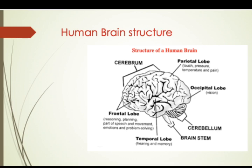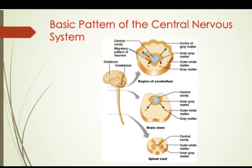All four lobes are important for the effective functioning of the human brain. If you look at the basic structure of the central nervous system, you have grey matter and white matter throughout. You have the region of the cerebellum, the brain stem, and the spinal cord, each with its own grey matter and white matter.